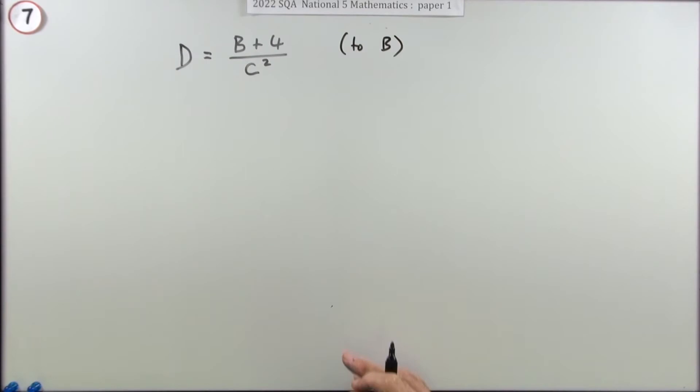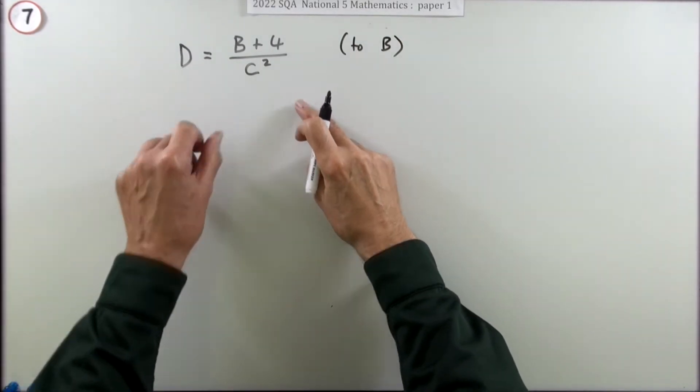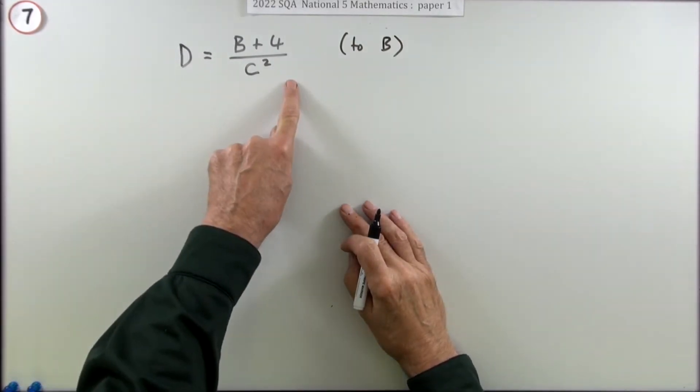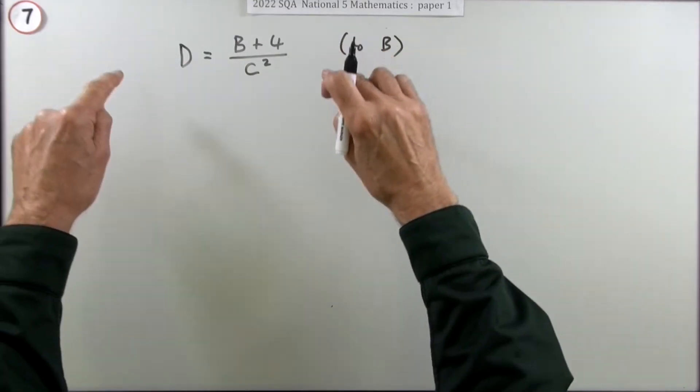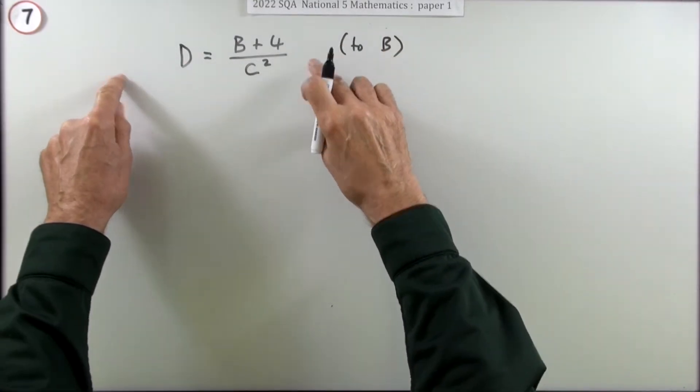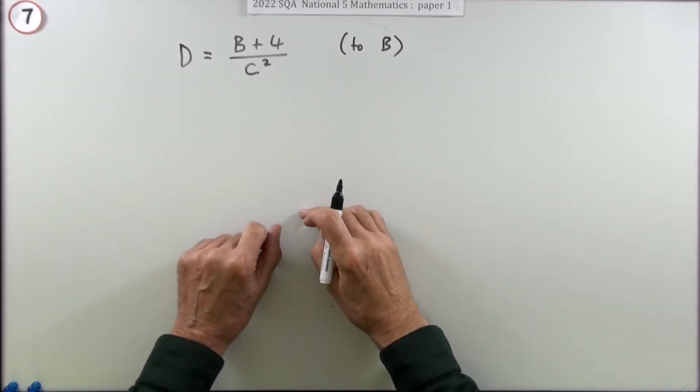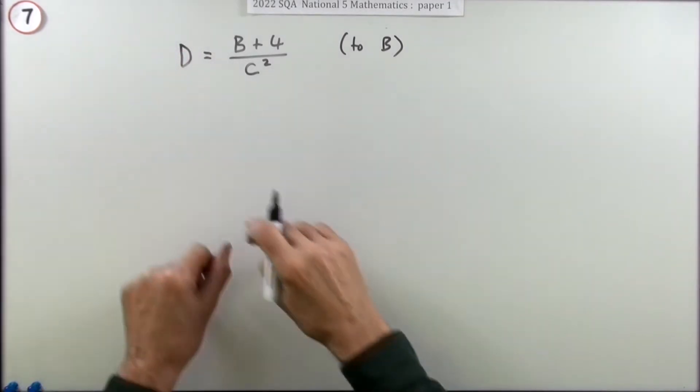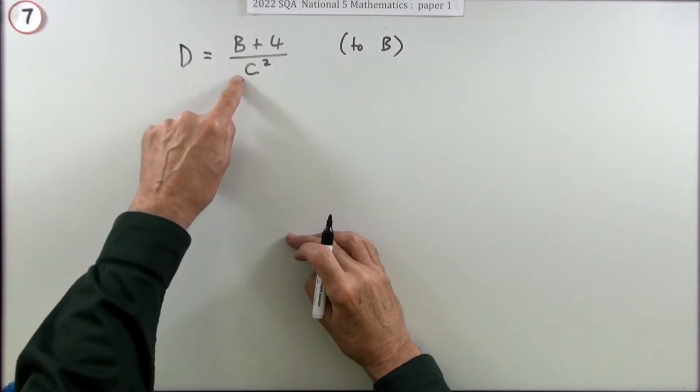You just use the normal rules of manipulating equations. If there's something you don't want on one side, you carry out the inverse operation, which removes it from that side and pops it over to the other side doing the inverse operation - opposite of add, subtract, multiply, divide.